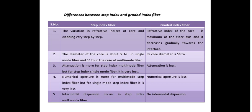Finally, let's look at the differences between step index fiber and graded index fiber. In step index fiber, the refractive index changes step by step from core to cladding. In graded index fiber, the refractive index gradually decreases from core to core-cladding interface. The diameter of the core in step index fiber is about 5 to 10 micrometers for single mode and 50 to 200 micrometers for multi-mode. For graded index fiber, the core is 50 to 200 micrometers and cladding is 100 to 250 micrometers.